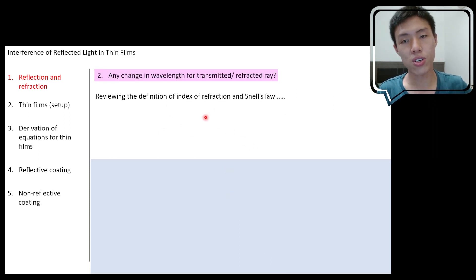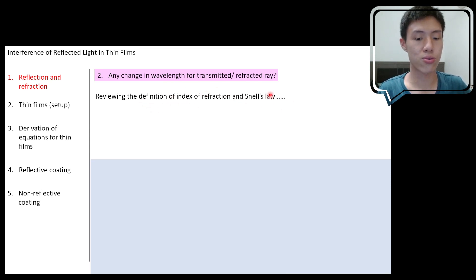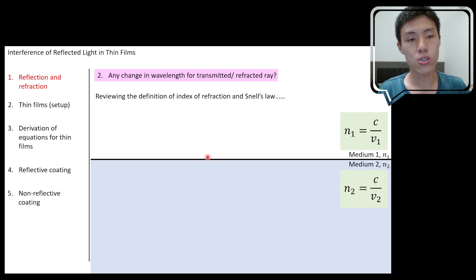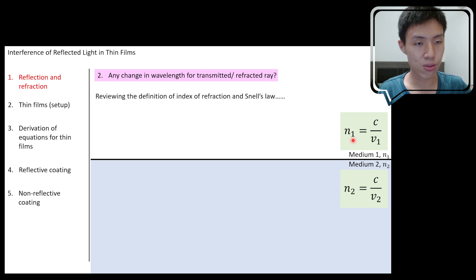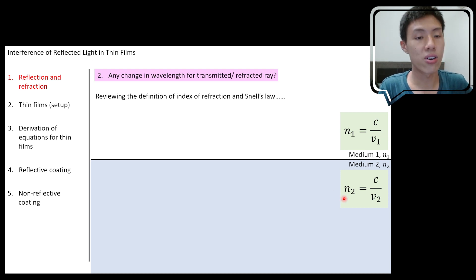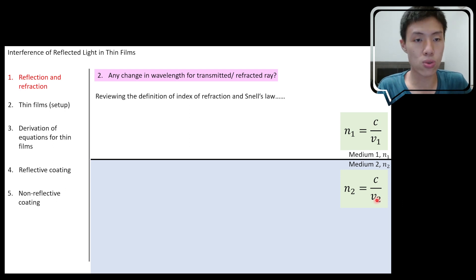To understand that, you might need to recall the definition of index of refraction and also Snell's law. You have medium one above and medium two below. In medium one, the index of refraction n1 is defined as the ratio of the speed of light in vacuum to the speed of light in medium one. And n2 is the ratio of the speed of light in vacuum to the speed of light in medium two.